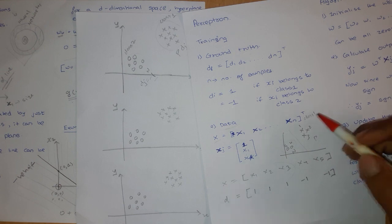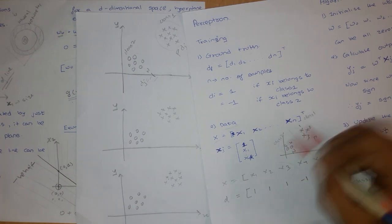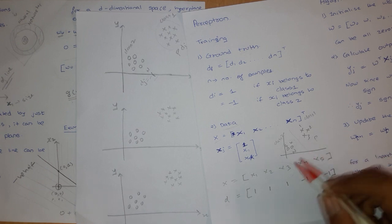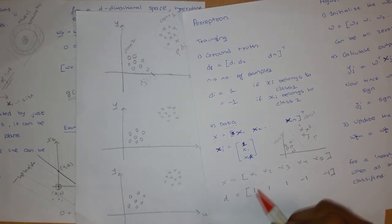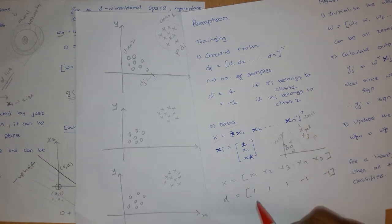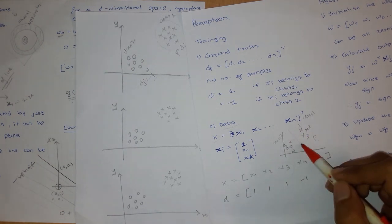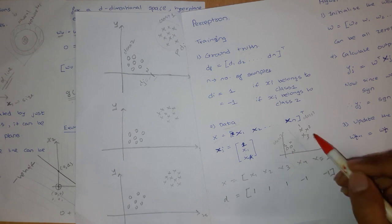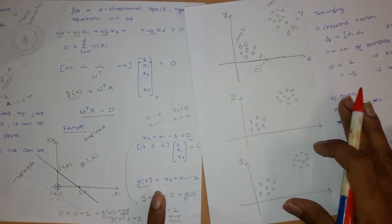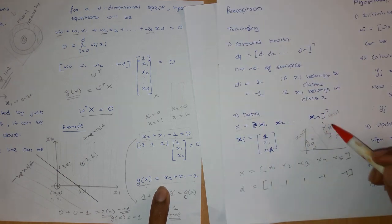We can name the classes as class one and class two, but naming them positive and negative is more convenient because the algorithm is designed so that for the positive class the D values are positive. We want a line whose output becomes positive for all points in the positive class.